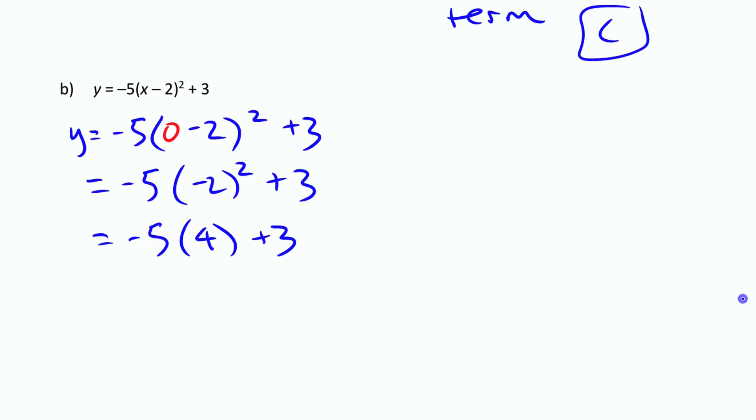And if I keep going with that, negative 20 plus 3, negative 17. That's my y-intercept. Notice that number didn't come up anywhere in there. When it's in vertex form, you can't just read it out of there. When it was in standard form before, it was just that constant term.